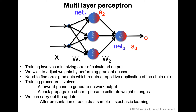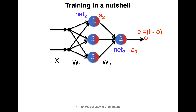We can update weights either sample by sample — giving one pattern, calculating the corresponding weight changes, and applying them after each presentation, called stochastic learning — or we can apply the entire dataset at once. In that case, we calculate error gradients across the entire dataset and do a single update. This is easy to do in MATLAB.